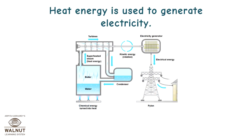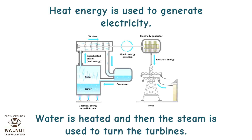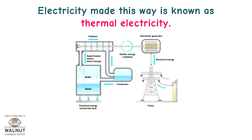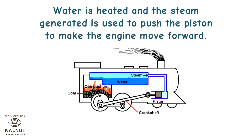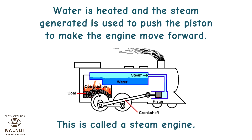Heat energy is used to generate electricity. Water is heated and then the steam is used to turn the turbines. Electricity made this way is known as thermal electricity. Water is also heated and the steam generated is used to push the piston to make the engine move forward — this is called a steam engine.